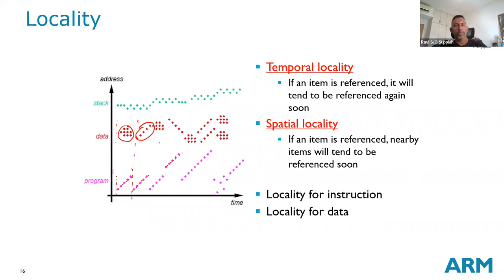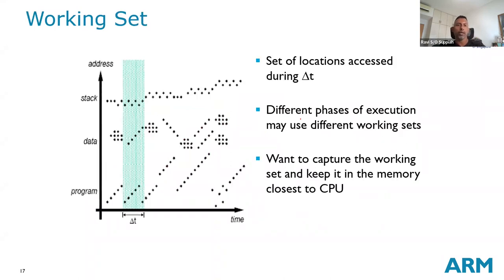Because of this behavior, we can observe two types of locality: temporal and spatial. Temporal locality means if I accessed a particular variable, there is a high chance I will need to access it again within the same window. Spatial locality means if a memory element has been accessed, there is a high chance that nearby memory elements will also be accessed. Because of this locality we can capitalize on it to improve system efficiency — this is the working set concept.